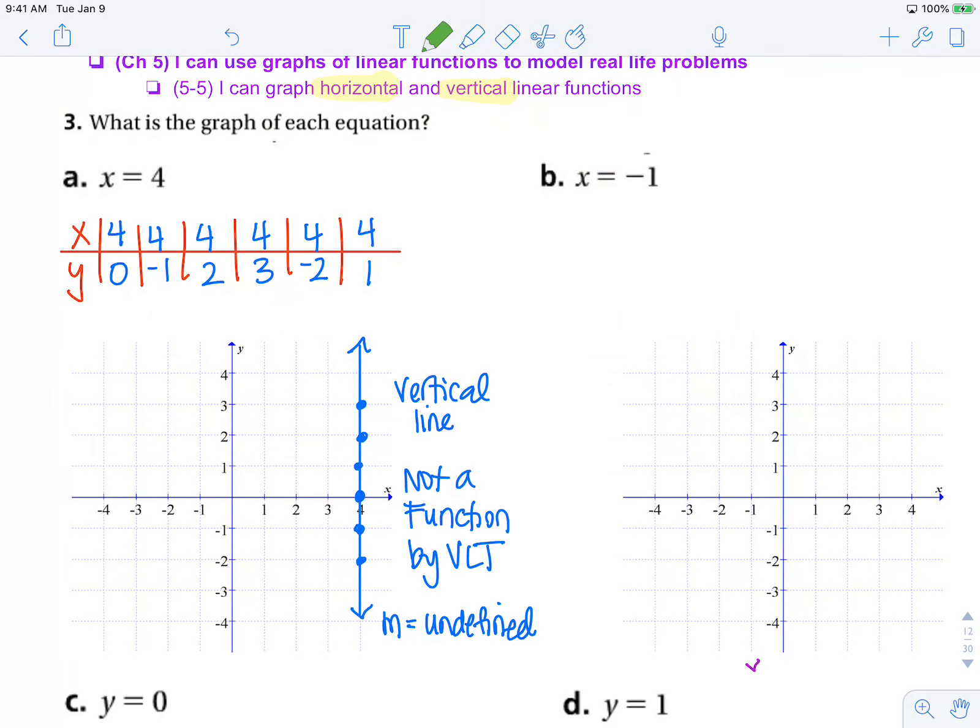We want all points where x is negative 1. Well, x is negative 1 here, here, here, right? X is negative 1 all the way up and down this vertical line. So here is our vertical line x equals negative 1.